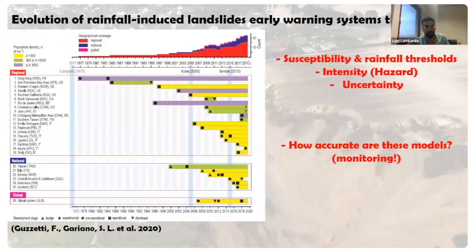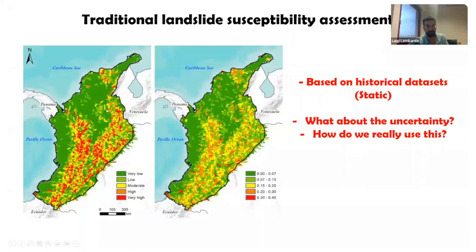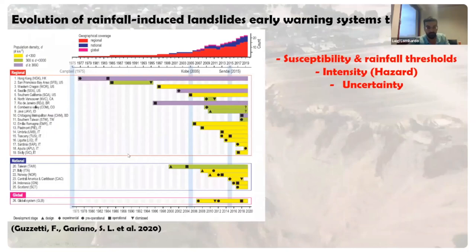These early warning systems are exclusively based on rainfall — we take landslide presences and absences and regress them according to the rainfall signal only. Whereas susceptibility is purely static in space, regressing landslides against landscape characteristics only. A combination of landscape characteristics and rainfall is very rare, and yet it is the most intuitive way we should work.